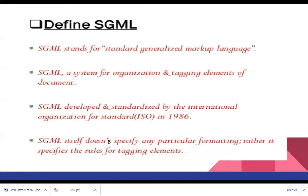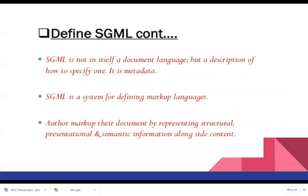SGML is mainly focused on tagging elements in a tag-based manner, and it is used to represent a meta language. A meta language is a language about, or containing information about, other languages. These two are the main focuses of SGML.